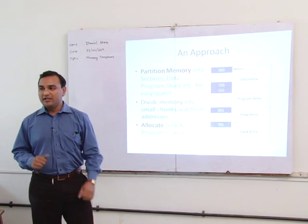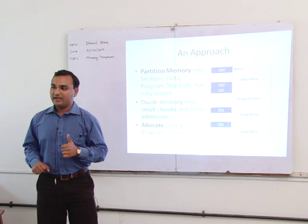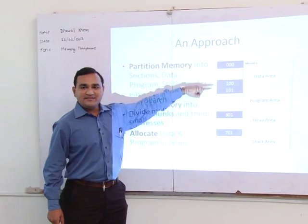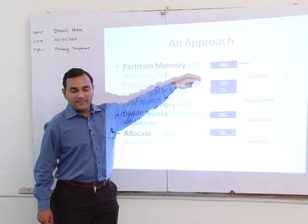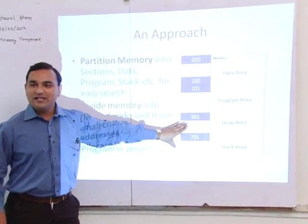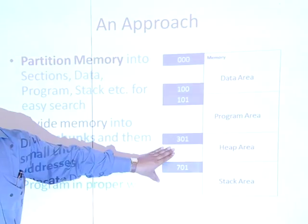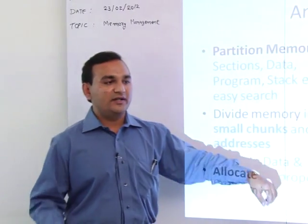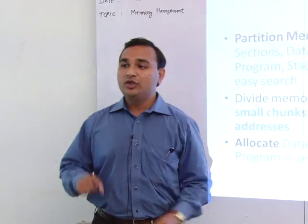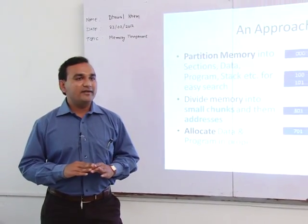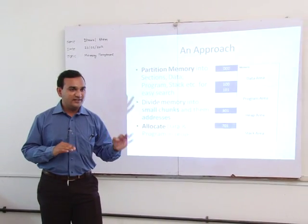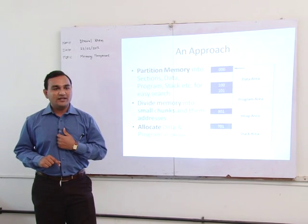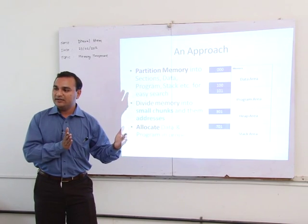Memory management is very much required, so what is our systematic approach? We can divide memory into sections: a data section, a program section, and a dynamic allocation section — a stack or heap — where memory can be allocated at run time. Second, we need to identify locations by address, just like in daily life we all have addresses. For example, Gandhinagar in Gujarat, sector 1, house number 474 A2 — that defines where I belong, enabling fast access. Similarly, memory must have address values.